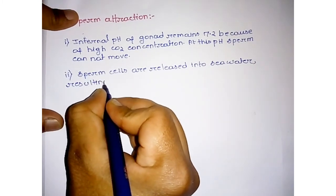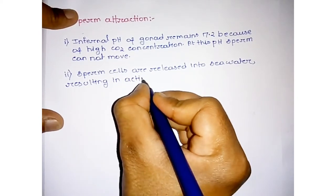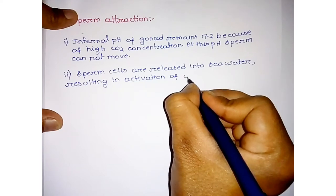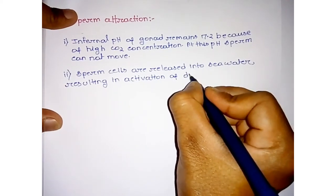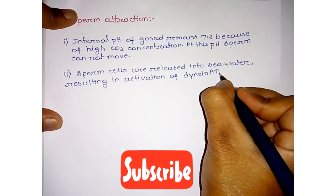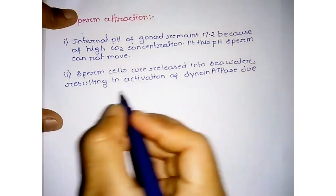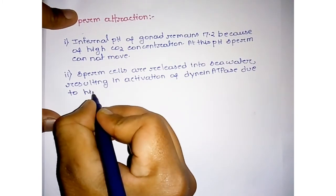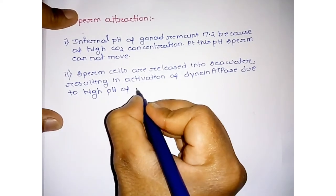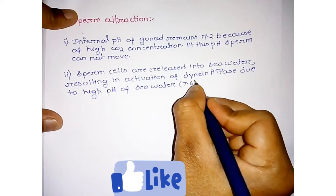Resulting in activation of dynein ATPase. ATPase means it splits ATP due to high pH of seawater, that is 7.6.